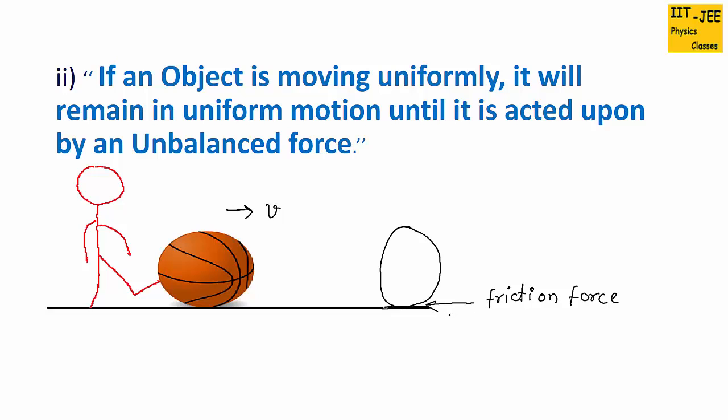But if you go in space and throw a ball, the ball will keep moving uniformly with the same speed and it will not stop because there is no friction force in space. So you can see the example of first law of motion in space.